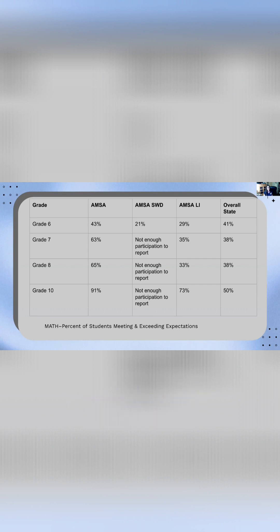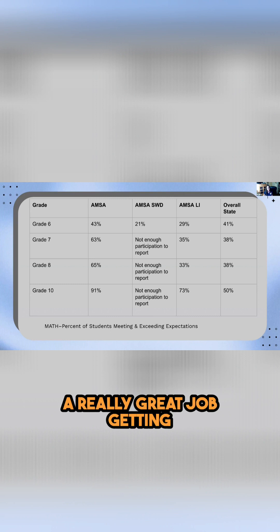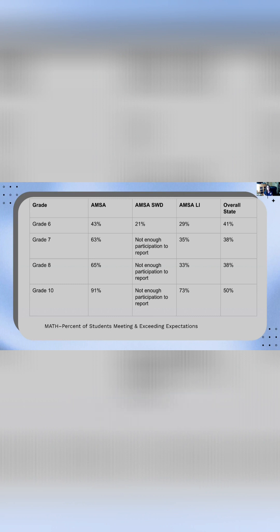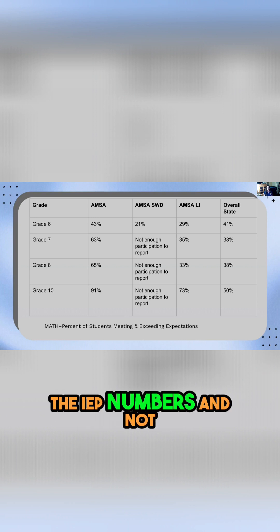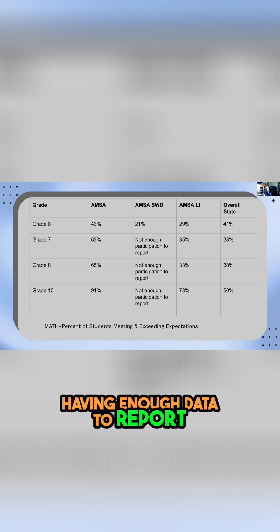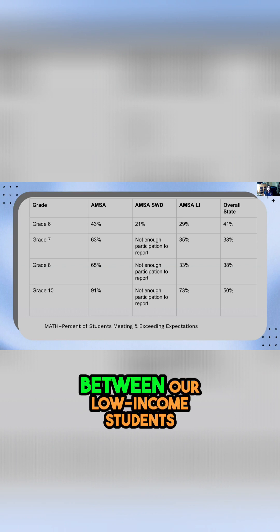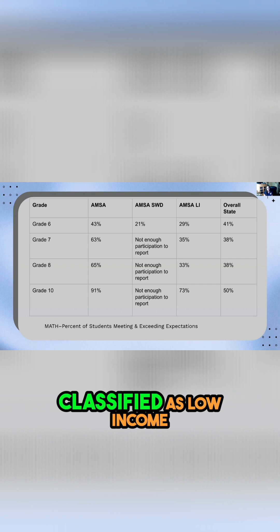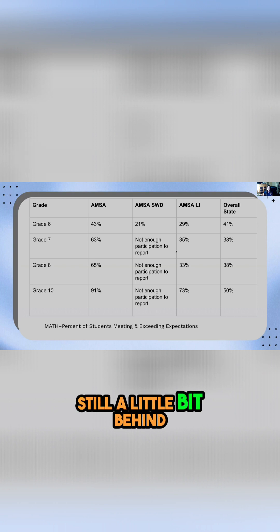Interestingly enough, when you look at grades seven, eight, and ten, there's not enough data to have them as a subgroup, which means that AMSA is doing a really great job getting kids up to par and closing that gap. In fact, they may no longer need their individual education plans, thereby lowering the IEP numbers and not having enough data to report. We can still see a gap between our low-income students and students not classified as low-income. It gets much closer in grade ten, but we're still a little bit behind.